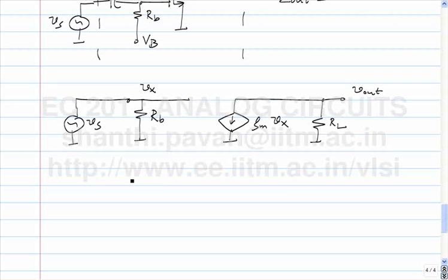What is the incremental input impedance? The incremental input impedance Rin, or Zin, is nothing but Rb.